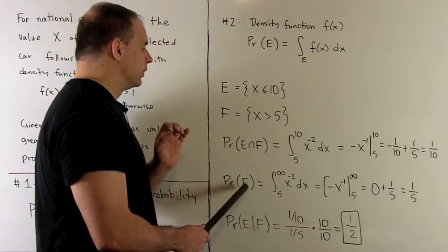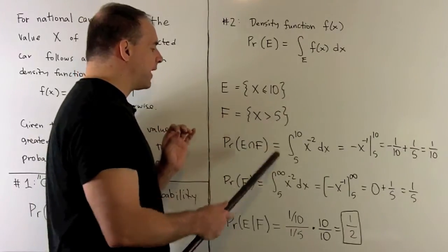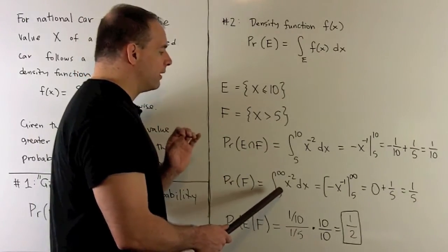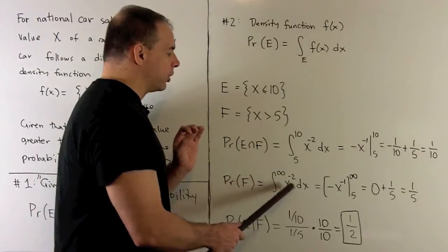For the probability of F, our event's just x bigger than 5. So our limits are gonna go from 5 to infinity. Do the same integral.